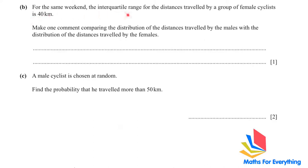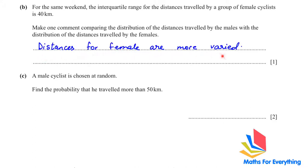For the same weekend, the interquartile range for female cyclists is 40 kilometers. The male IQR was 26 and the female IQR is 40, so the distances for females are more varied.